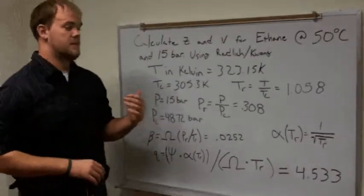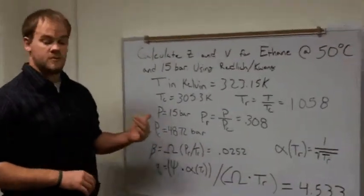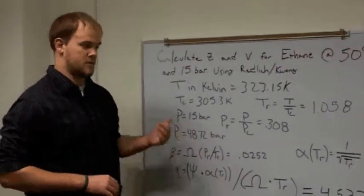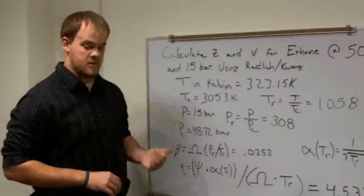Our first step is to find T in Kelvin, and then to look up through tables the Tc and Pc of ethane, which are the critical temperature and critical pressure.